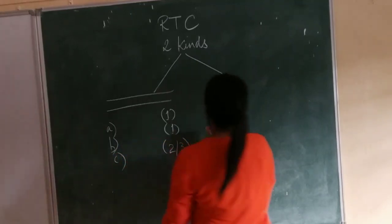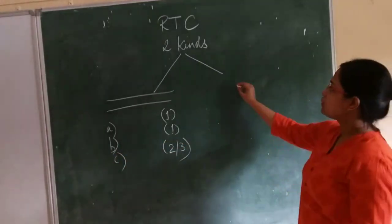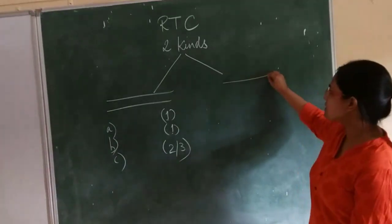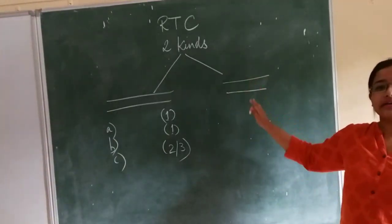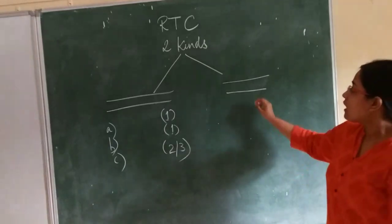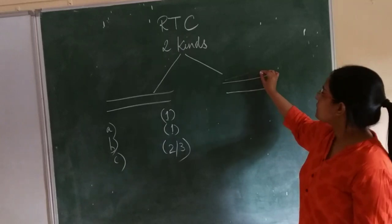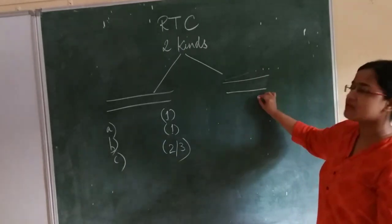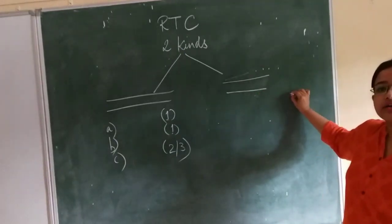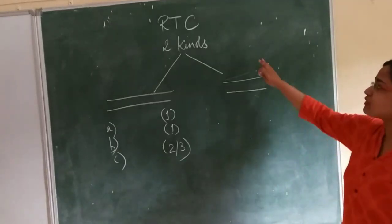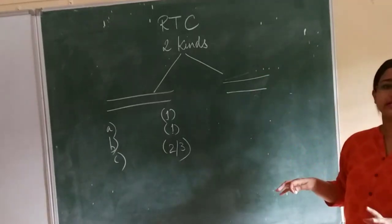Another kind of RTC is that you will be given directly one question: explain this stanza or this line. The entire stanza will not be written. What will be written is the first line of the poem, there is three dots, then suppose the last line of the second stanza. If we are giving you two stanzas.